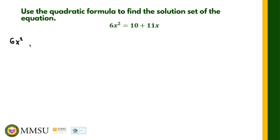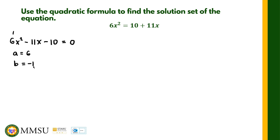We can write it as 6x squared minus 11x minus 10 equals 0. Then we need to identify the values of a, b, and c. We have a equals 6, b equals negative 11, and c equals negative 10. These are the values of a, b, and c.